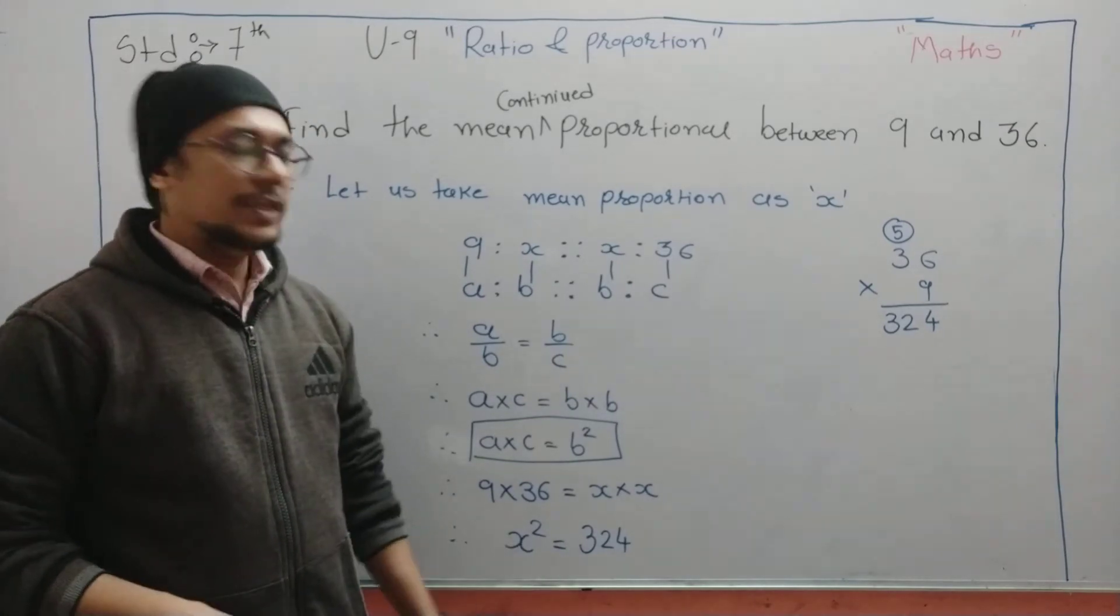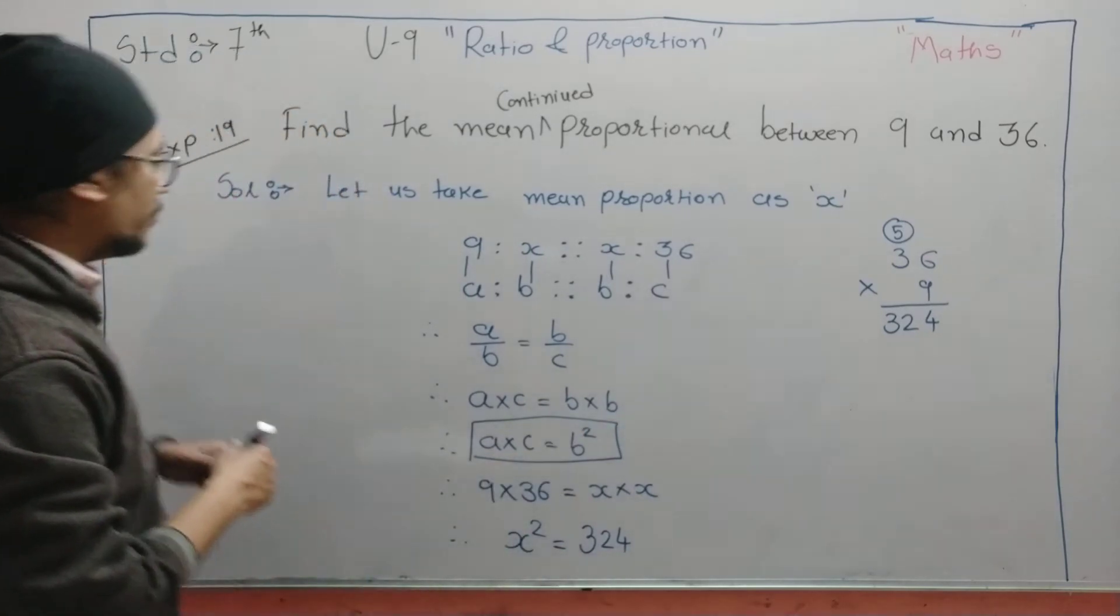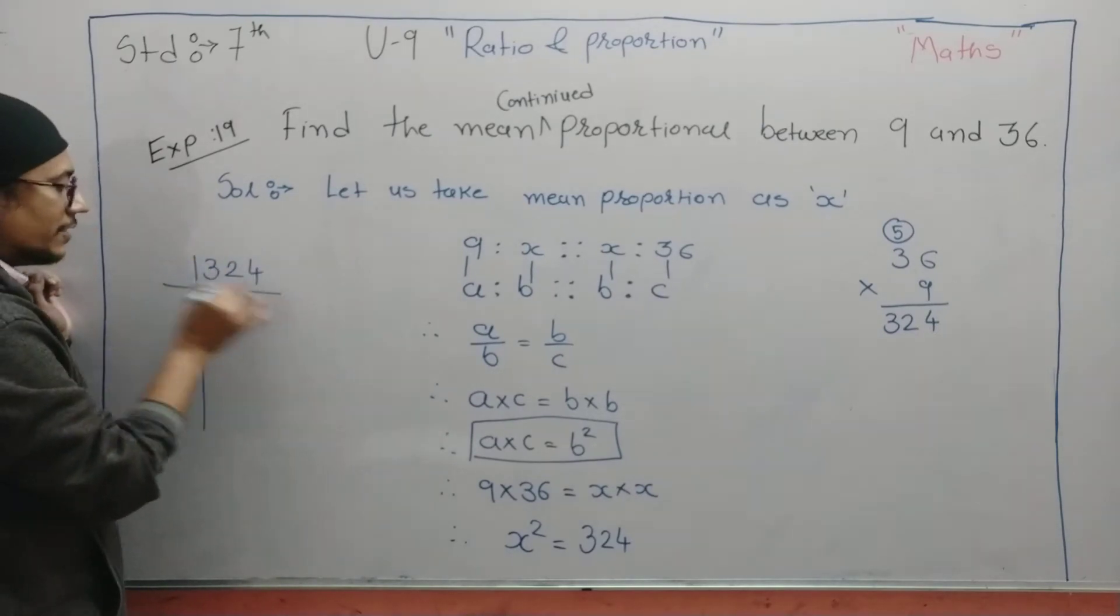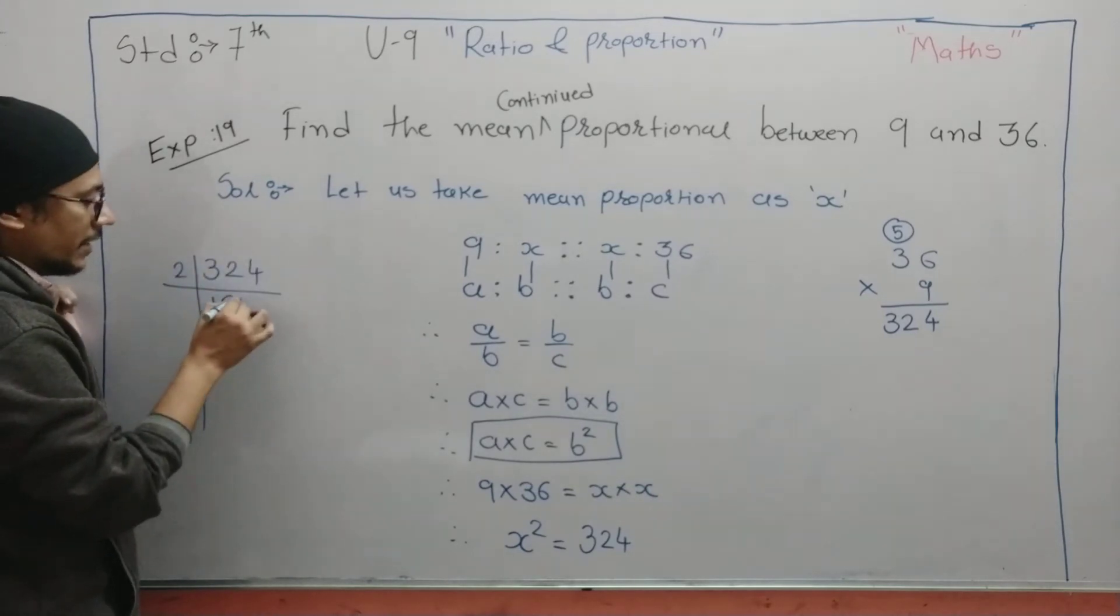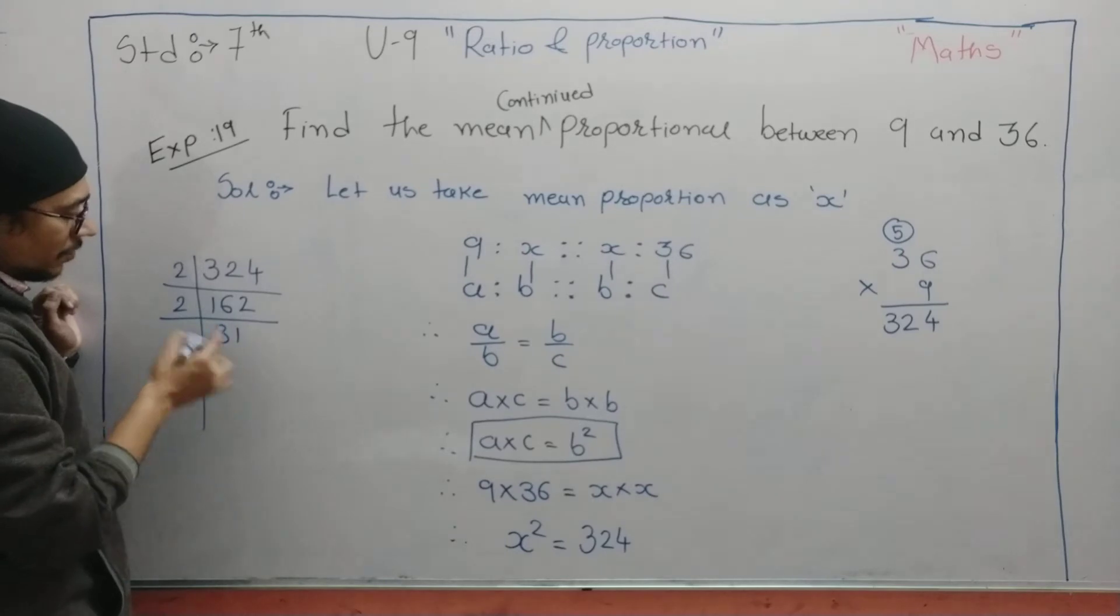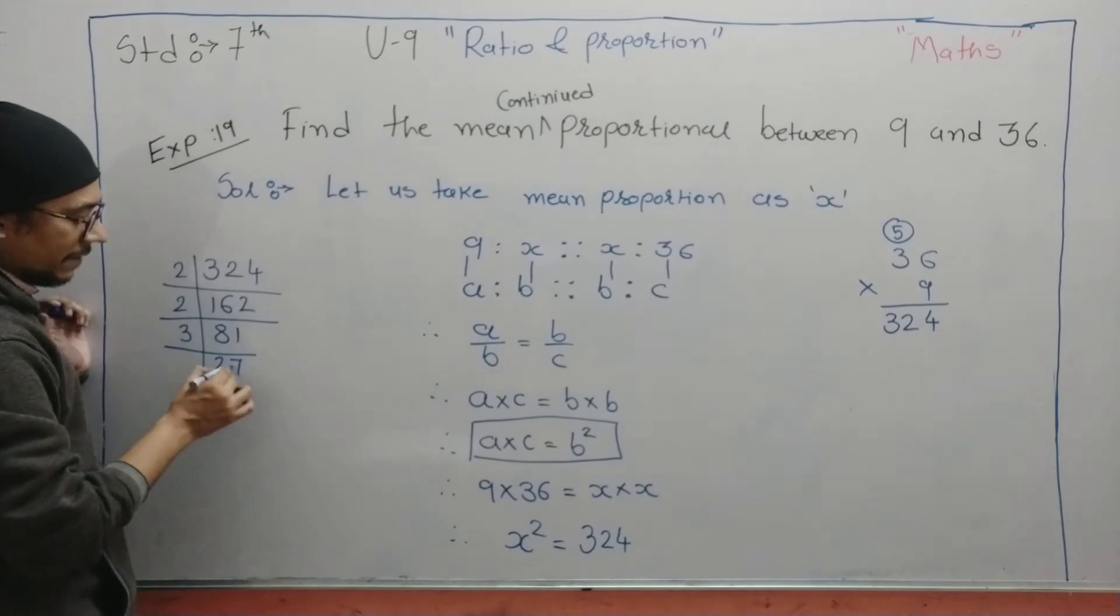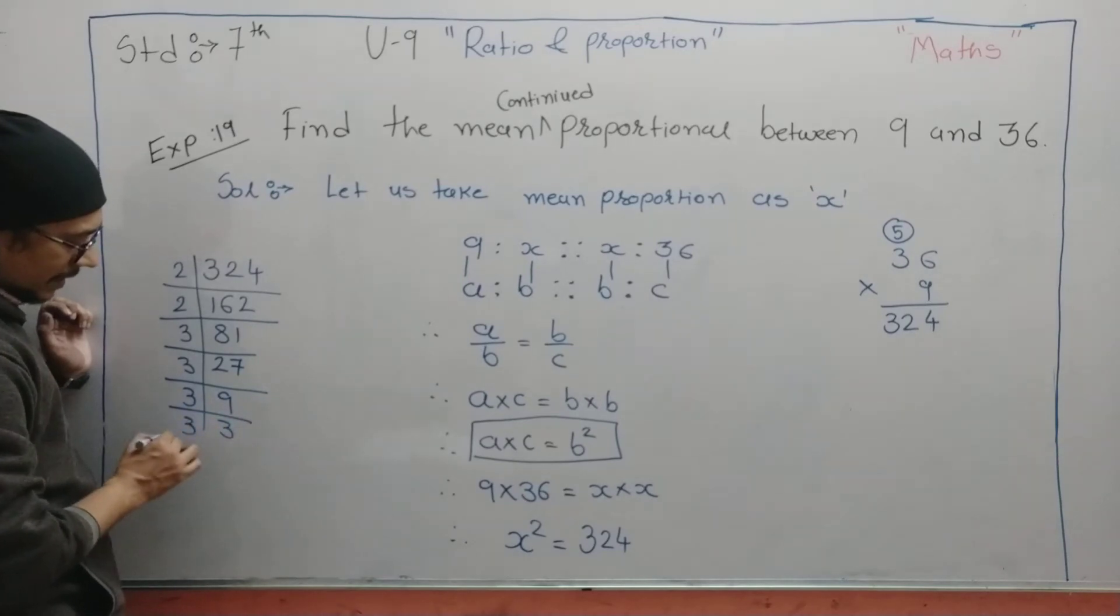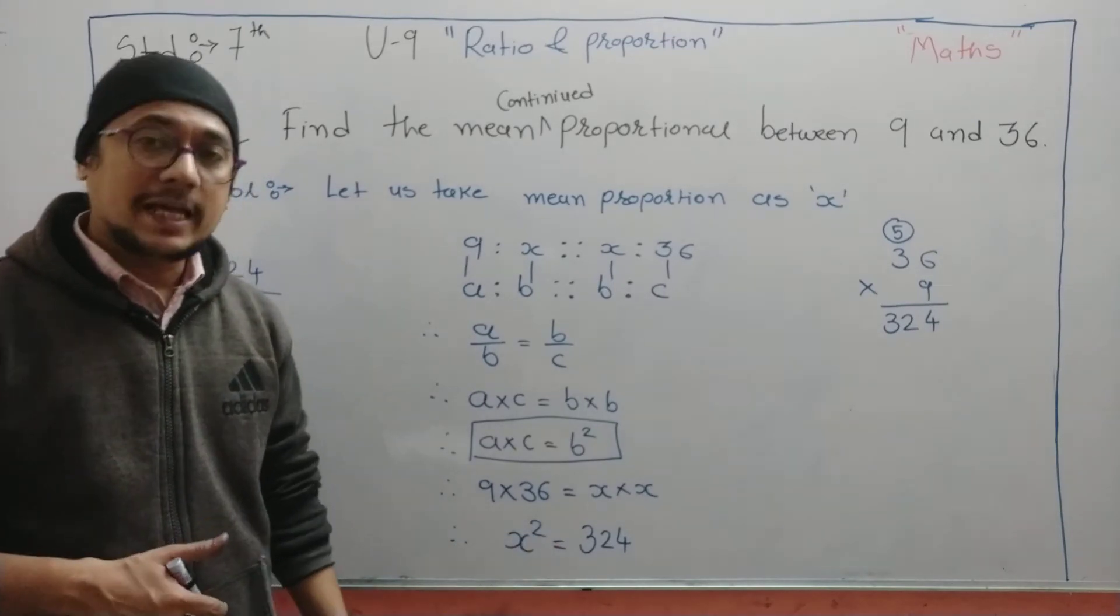So x square is equal to 324. We can take factorization or you can use square root method. Now we are going to do the factorization. 324, let us factorize by 2. 2 times 1 is 2, remainder will be 1, and 2 times 6 are 12, 2 times 2 are 4. Again 2, 2 times 8 are 16. 2 ones are - it is not possible by 2, so now we are going for 3. 3 times 2 are 6, 3 times 7 are 21. Again 3, 3 times 9 are 27. Again 3, 3 times 3 are 9. Again 3, 3 times 1 are 3.